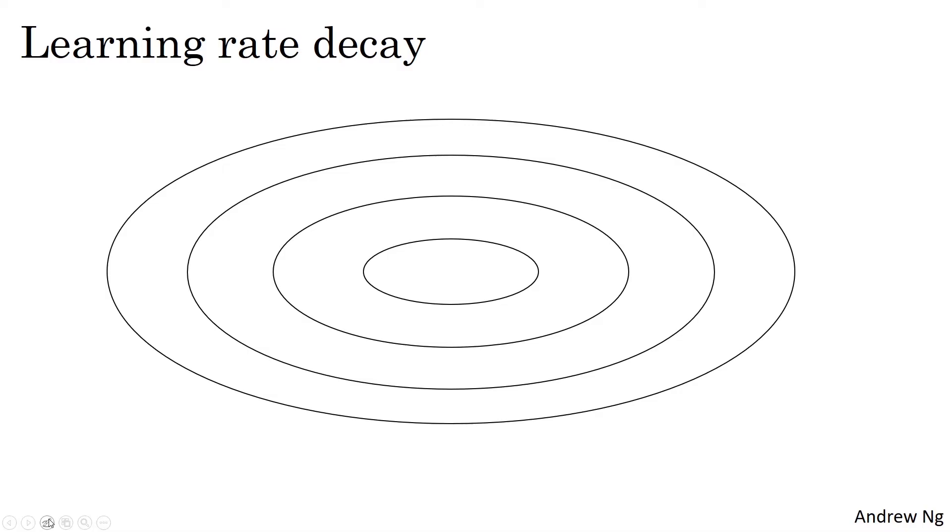Let's start with an example of why you might want to implement learning rate decay. Suppose you're implementing mini-batch gradient descent with a reasonably small mini-batch. Maybe a mini-batch has just 64, 128 examples. Then as you iterate, your steps will be a little bit noisy, and it will tend toward this minimum over here, but it won't exactly converge. But your algorithm might just end up wandering around and never really converge. Because you're using some fixed value for alpha, and there's just some noise in your different mini-batches.